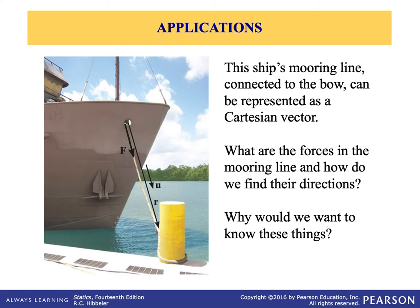The key point is the direction. It's a three-step procedure. The end result is identifying the force magnitude and direction and then writing the force in Cartesian coordinate format. The force acting along the rope can be represented as a Cartesian vector by establishing the x, y, and z axes. Step one is to form a position vector called R along the rope. To give you a quick hint, you take the coordinates of the final point — the head — and subtract the coordinates of the tail, which is the starting point.